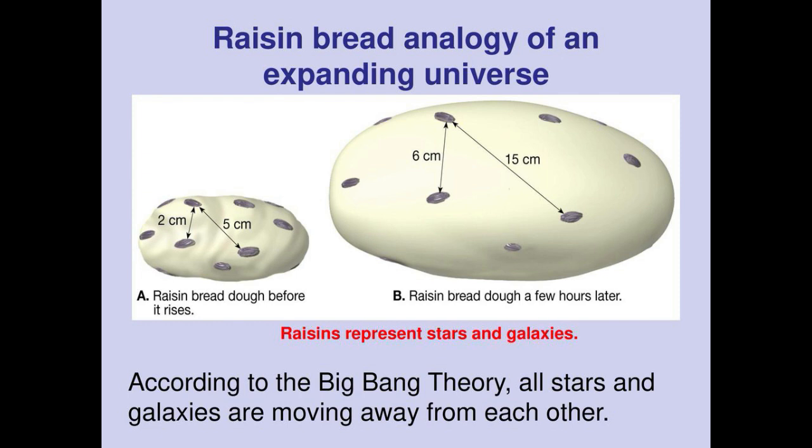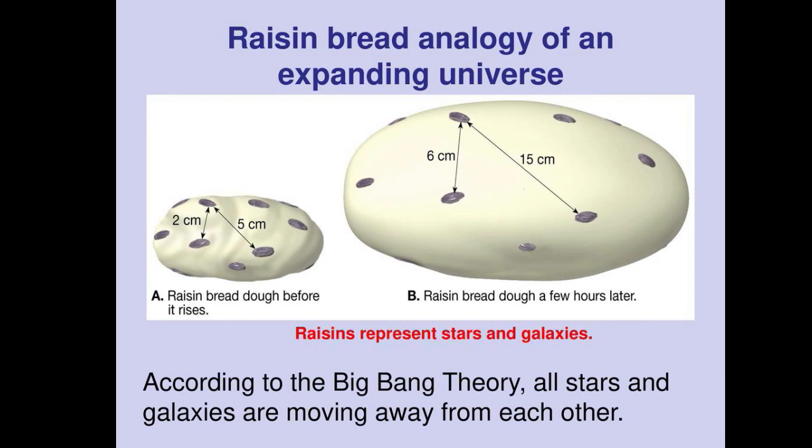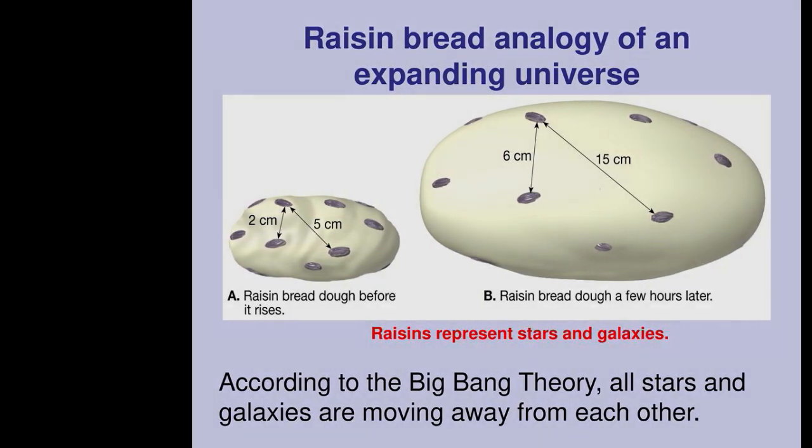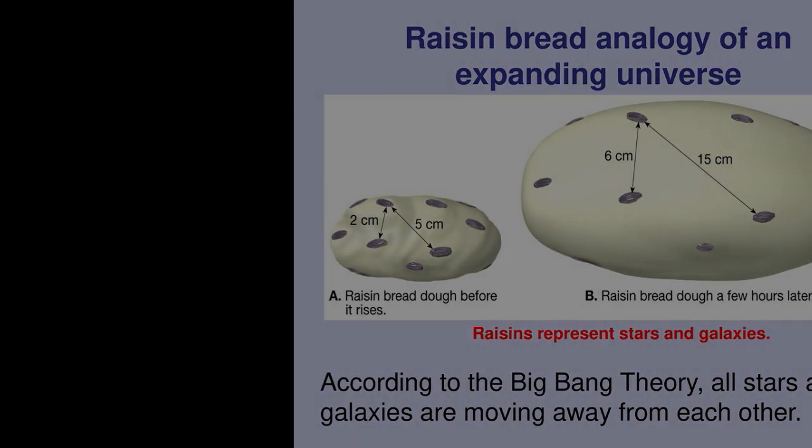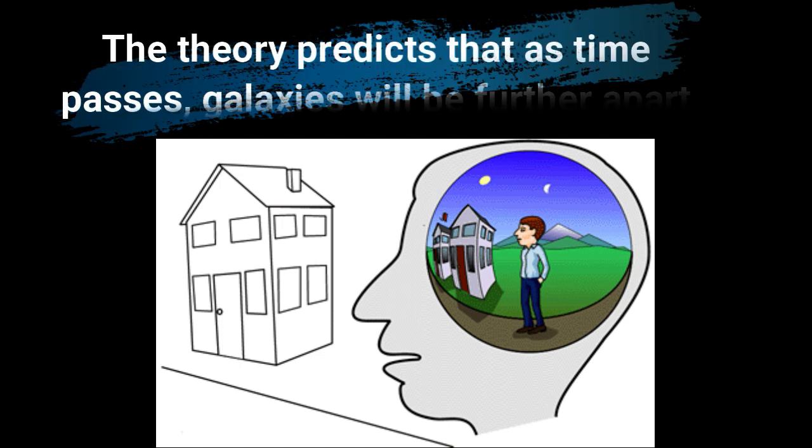Therefore as time goes by, the densities of raisins within the bread dough will decrease as the loaf expands, because the raisins will be spread more thinly. We do see this phenomenon in rising bread dough. But do we see this in galaxies? The expanding universe theory predicts that as time goes by, the density of galaxies within the universe will decrease as the universe expands, moving galaxies further and further away from each other over time, spreading them more thinly across space.